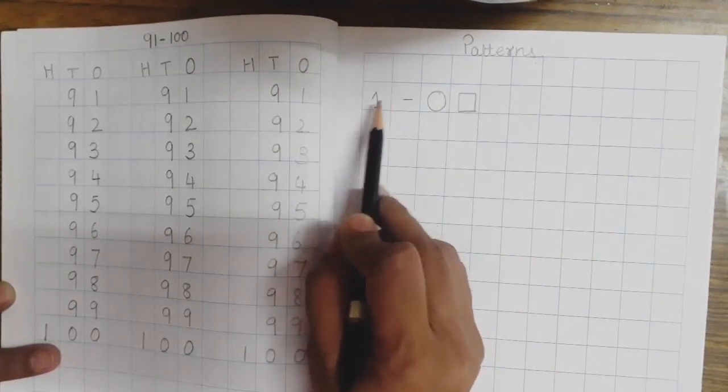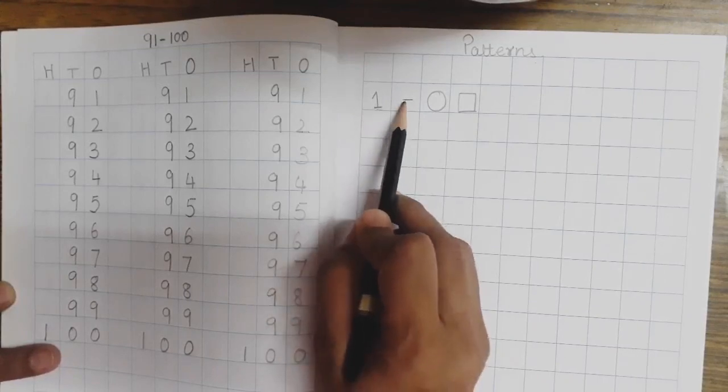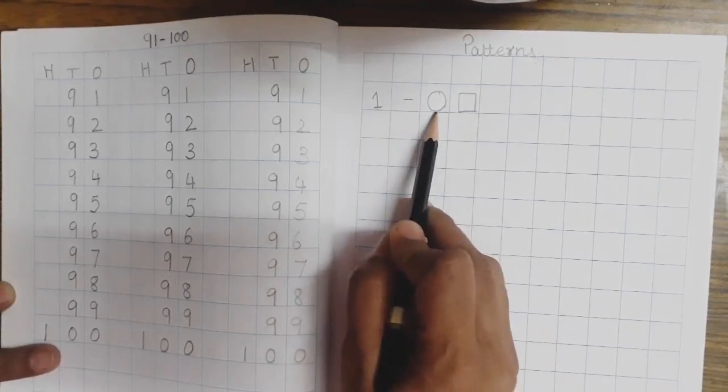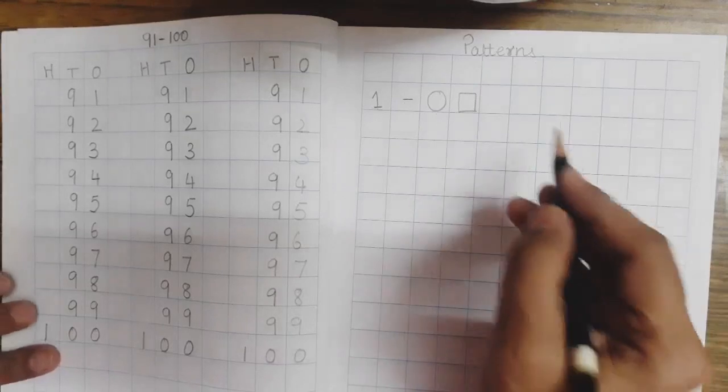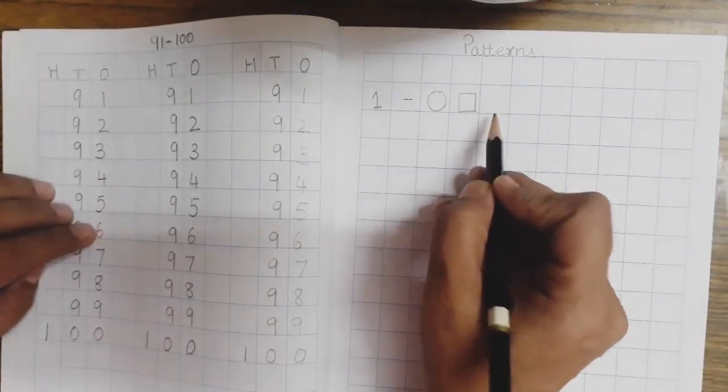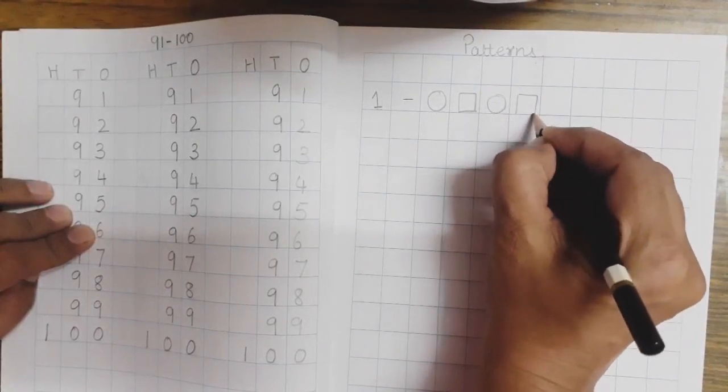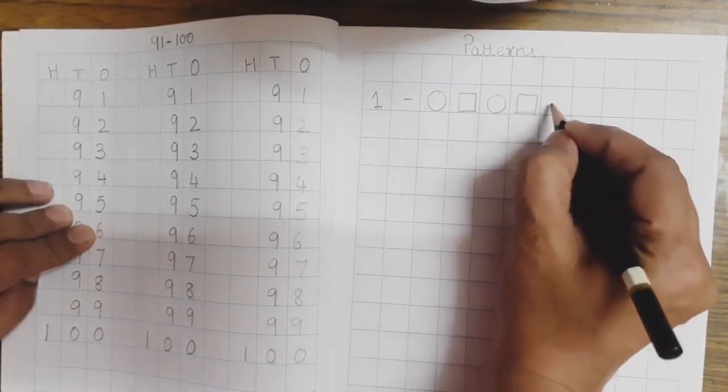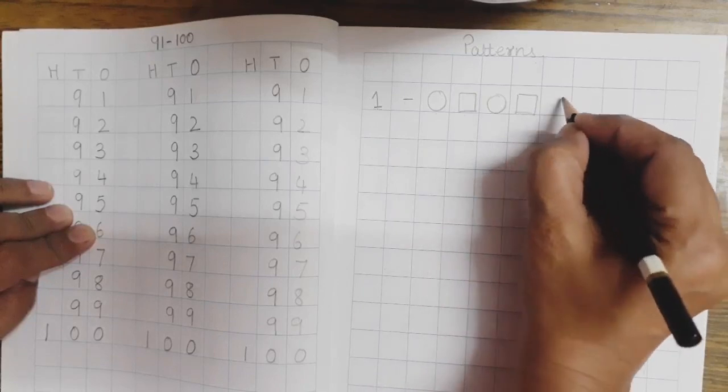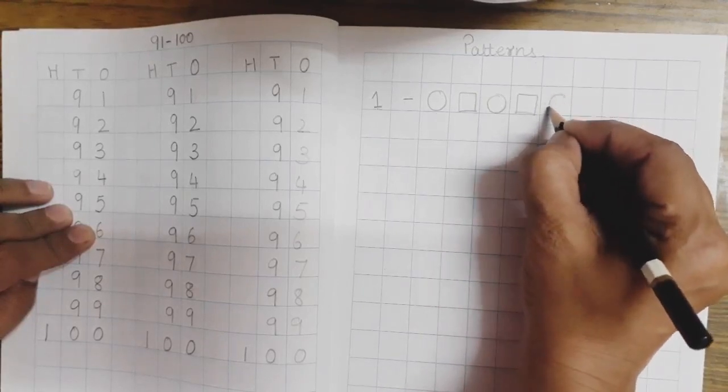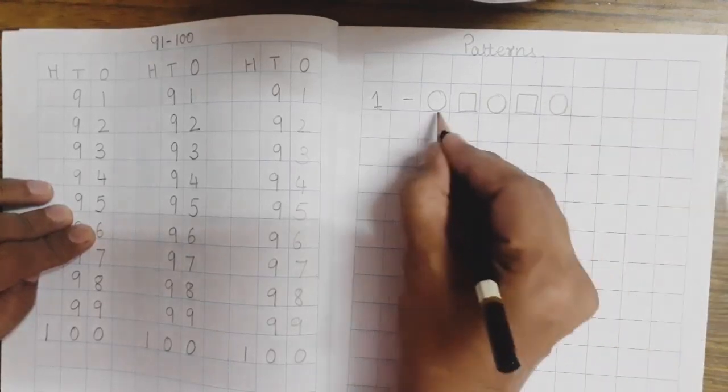Now, here already you can see I have written 1 then dash and here I have drawn 1 circle and 1 square. Now, tell me children what will come next? Yes, circle and then square and after square can I draw square? No, I have to draw again a circle because this is a pattern.